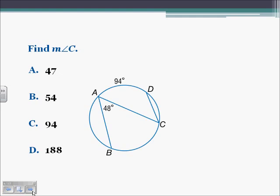If we are asked to find the measure of angle C, we know angle C is created by segments AC and CD. The two non-vertex points are A and D, so the arc intercepted is arc AD. If arc AD is 94 degrees, the inscribed angle needs to be half of the arc measure, so that's going to be 47, which is answer A.